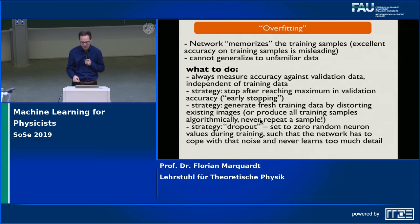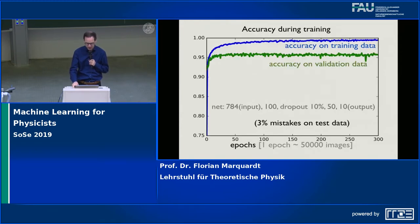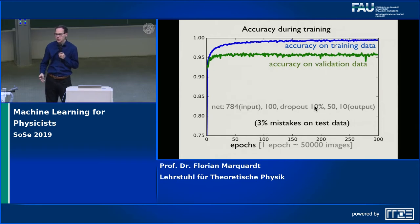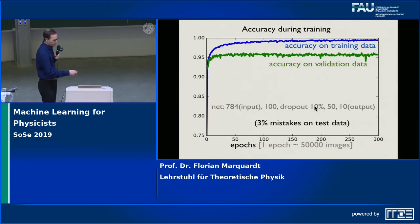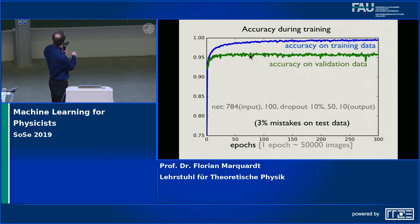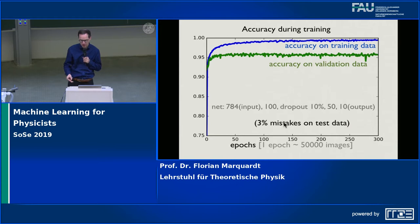It's an interesting observation that noise here helps. An example shows how dropout helps: we introduce 10% dropout — during any pass through the network, randomly 10% of the neuron values or connections are set to zero. The accuracy on the validation data still does not reach the accuracy on the training data, but at least it levels off and doesn't go down again. The numbers are much better: reaching 96 or 97% accuracy on validation data, so only 3% mistakes. Things have really improved thanks to dropout.